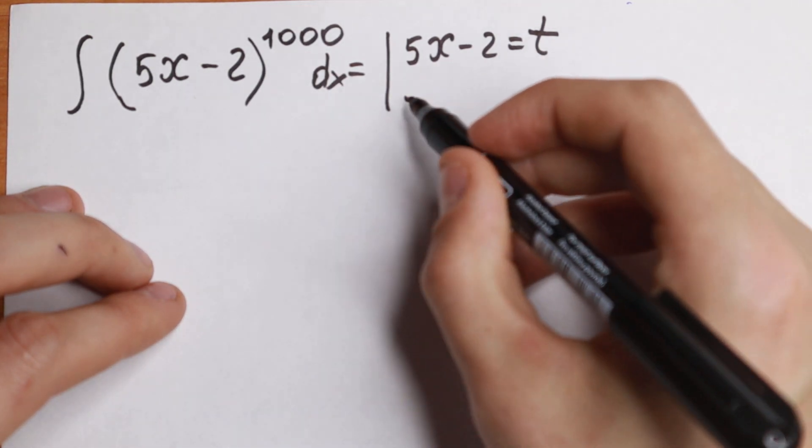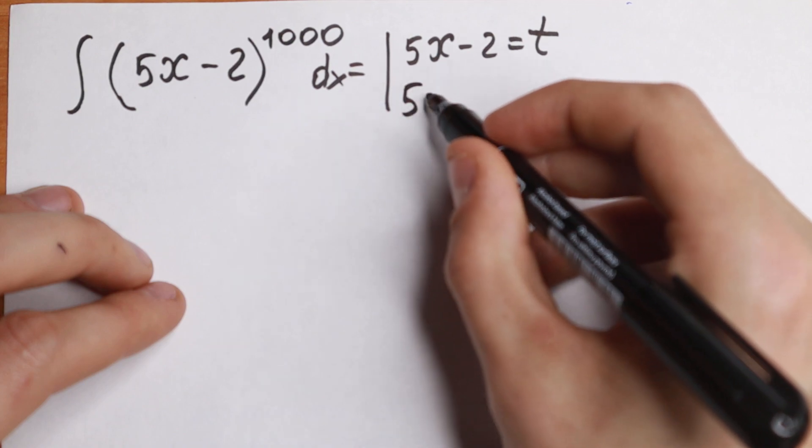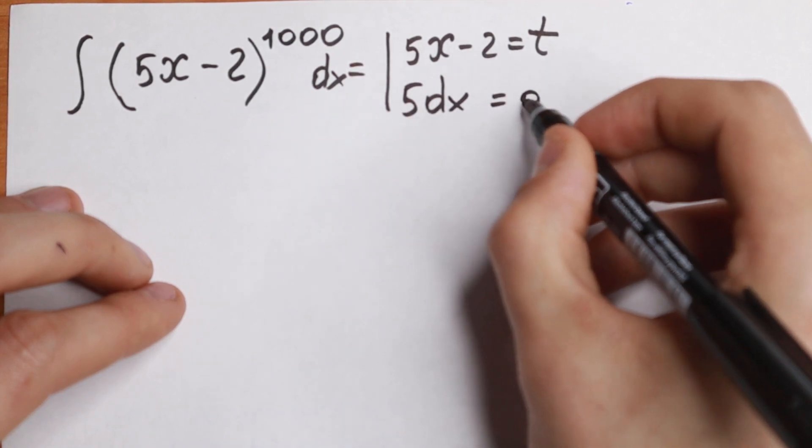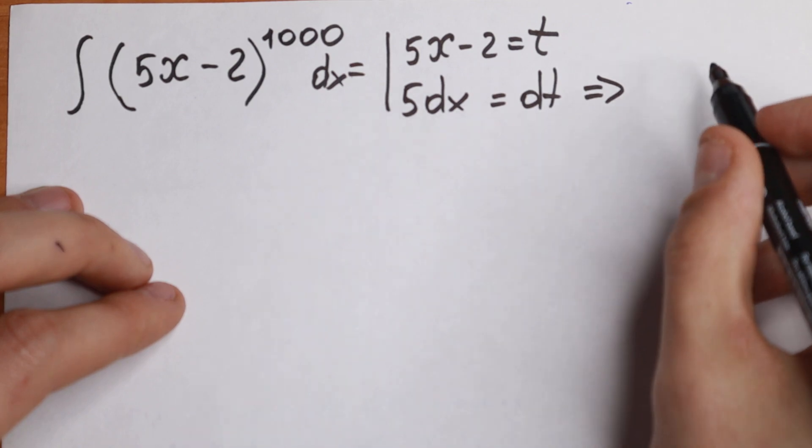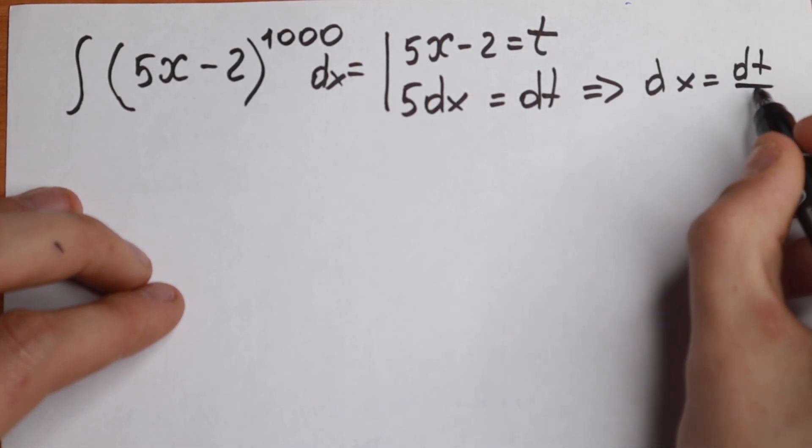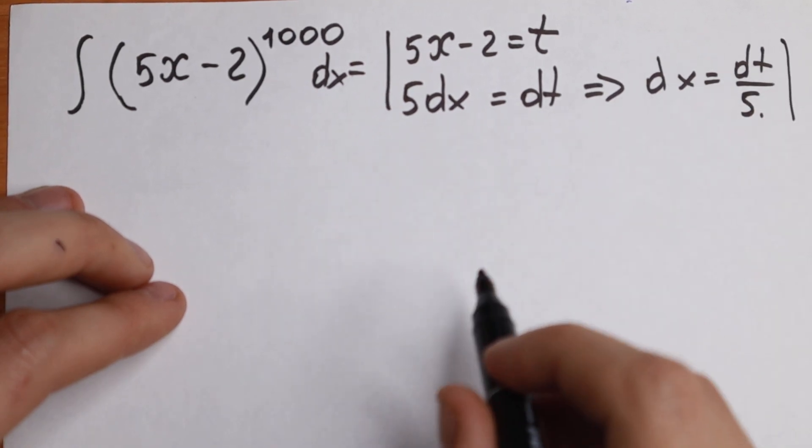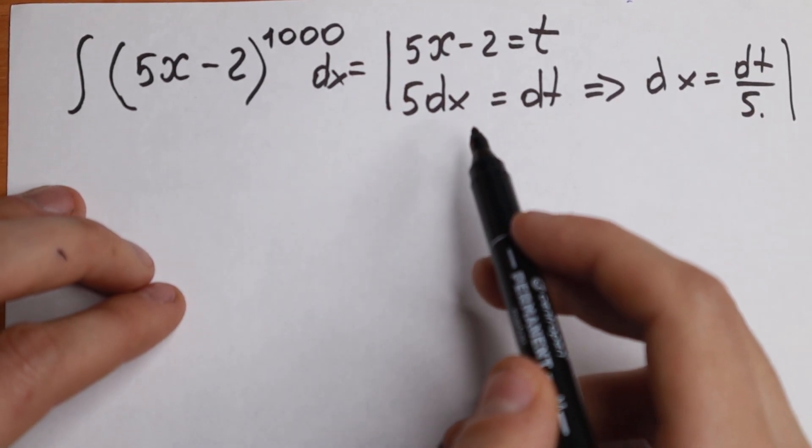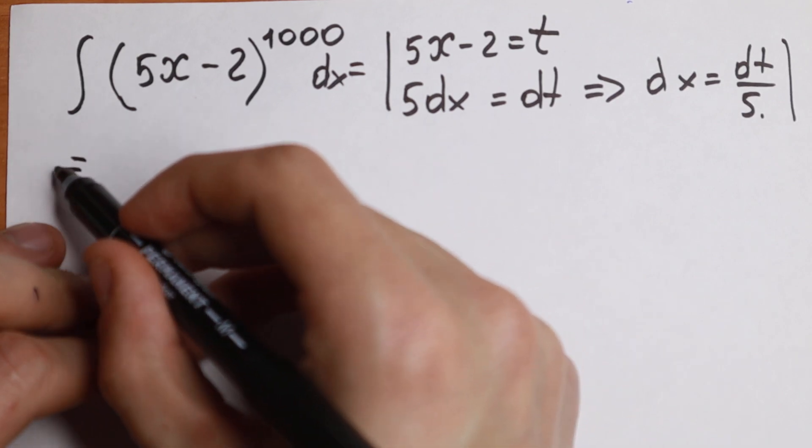If we find derivative from both sides, we will have 5 dx equal to dt. And if we divide both sides by 5, we will have dx equal to dt over 5. So we have our substitution. We find all elements that we need for our substitution. So let's substitute it.